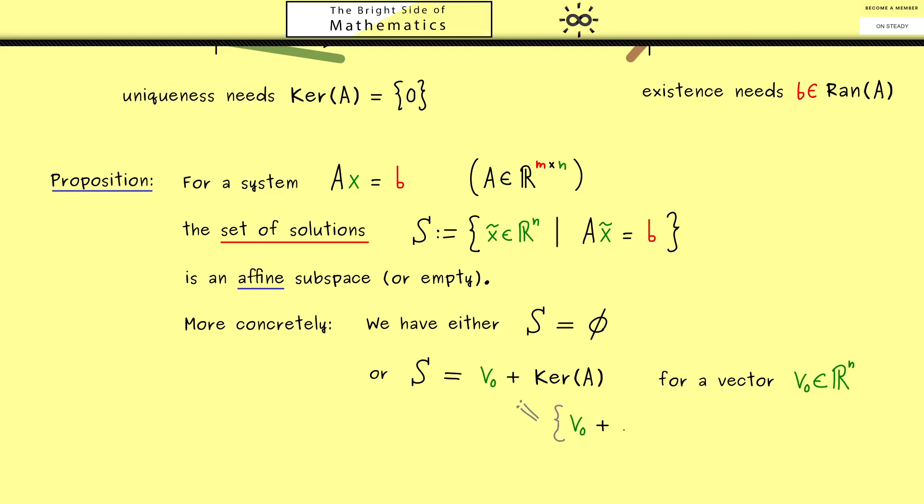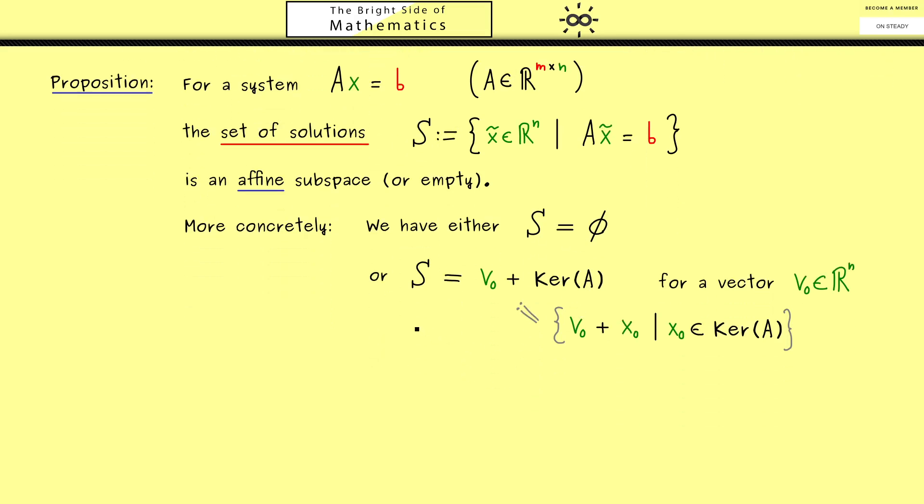This means you have an element v_0 plus an element x_0 where x_0 comes from the kernel of A. Hence it's the whole set with elements of this form. Indeed this is a common notation for such an affine subspace, simply because you immediately see that you have an ordinary subspace that is translated by one vector v_0. Hence that is what you can remember, an affine subspace is just a translated linear subspace.